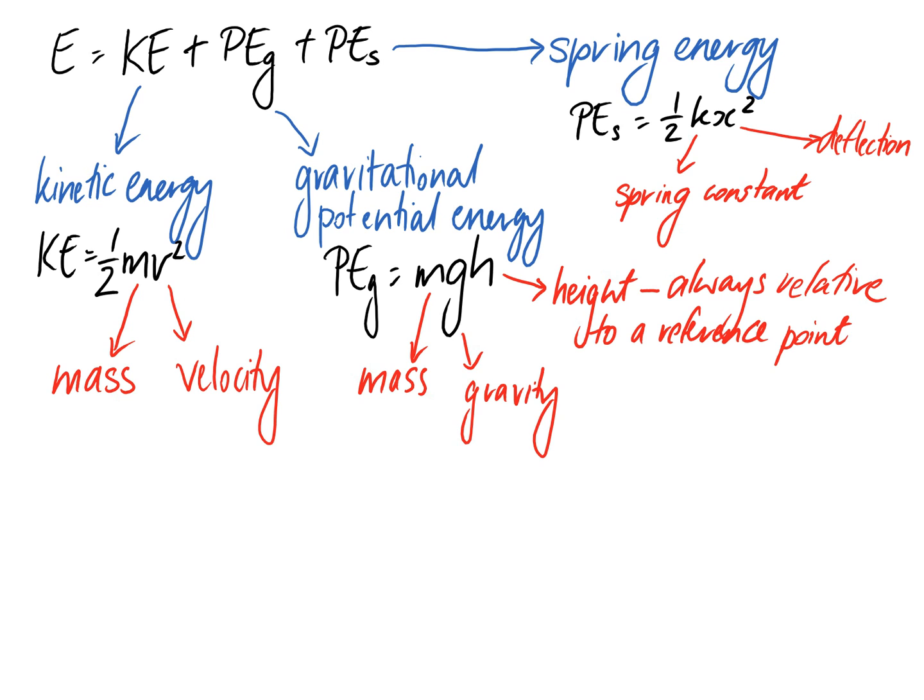So that's how we can calculate the total energy we have at any particular point. In all of our questions, it's only going to be kinetic energy, gravitational potential energy, and spring energy coming into it.